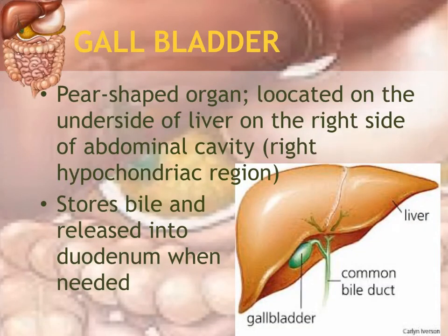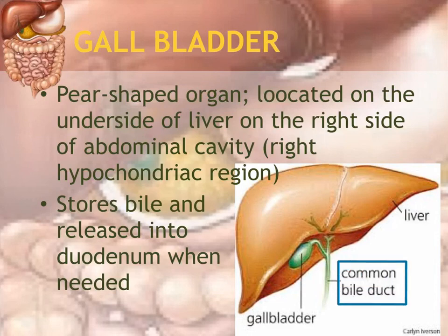The gallbladder is a pear-shaped organ found underneath the liver on the right side, located in the right hypochondriac region. Its job is to store bile produced by the liver. Bile is then released into the duodenum via the cystic duct. The cystic duct joins with other ducts to form the common bile duct, which releases bile into the duodenum.